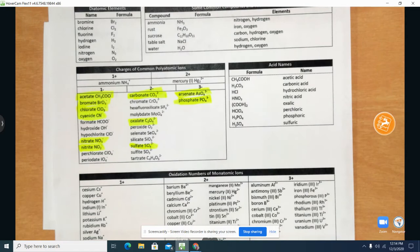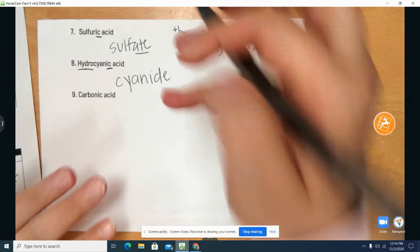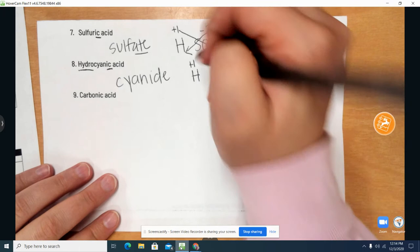So we have carbon and nitrogen with a minus one charge. We have our hydrogen with a plus one. And then we have our cyanide with CN minus one.